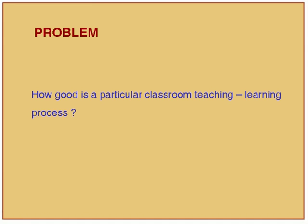Another example: you have two classrooms where the same topic is being taught to approximately the same number of students at the same level. You must observe from outside and determine which classroom has better teaching. Indices you might use include class participation, questions students ask, facial expressions, use of teaching aids, and blackboard utilization.